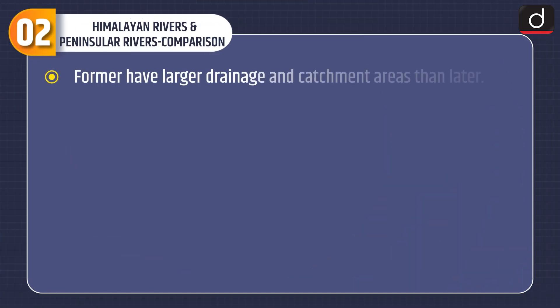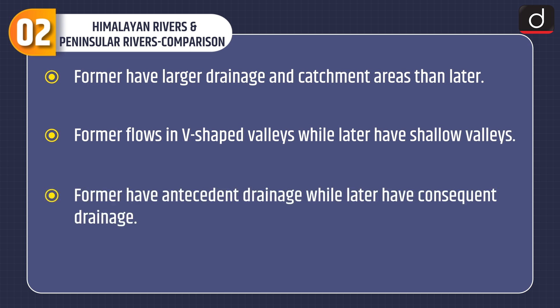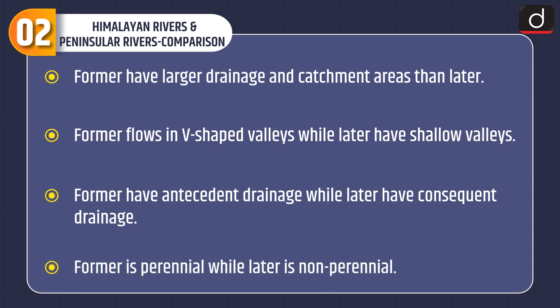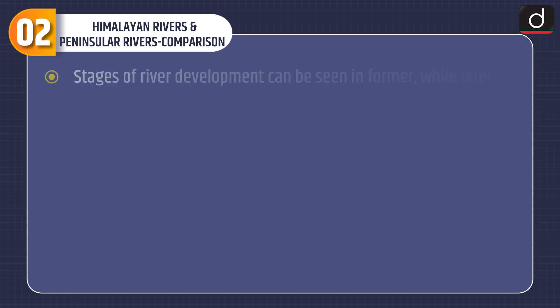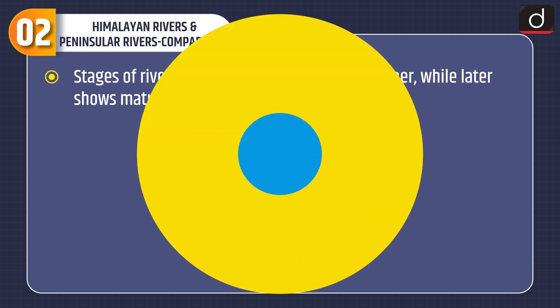Now let's discuss the Himalayan Rivers and Peninsular Rivers comparison. Himalayan Rivers have larger drainage and catchment areas. They flow in V-shaped valleys while Peninsular Rivers have shallow valleys. Himalayan Rivers have antecedent drainage while Peninsular Rivers have consequent drainage. Himalayan Rivers are perennial while Peninsular Rivers are non-perennial. Stages of river development can be seen in Himalayan Rivers while Peninsular Rivers show a mature stage.